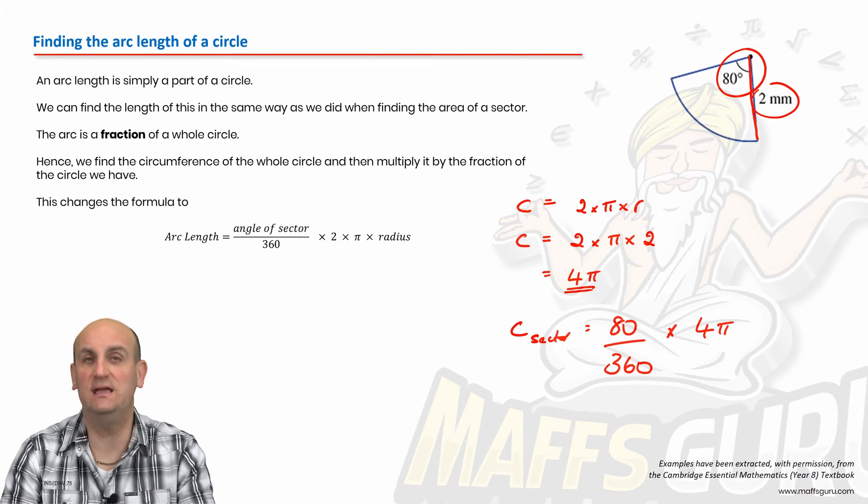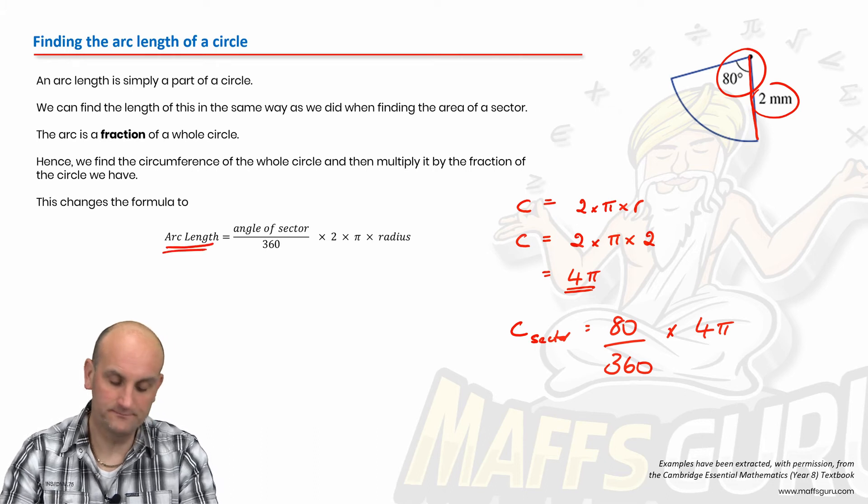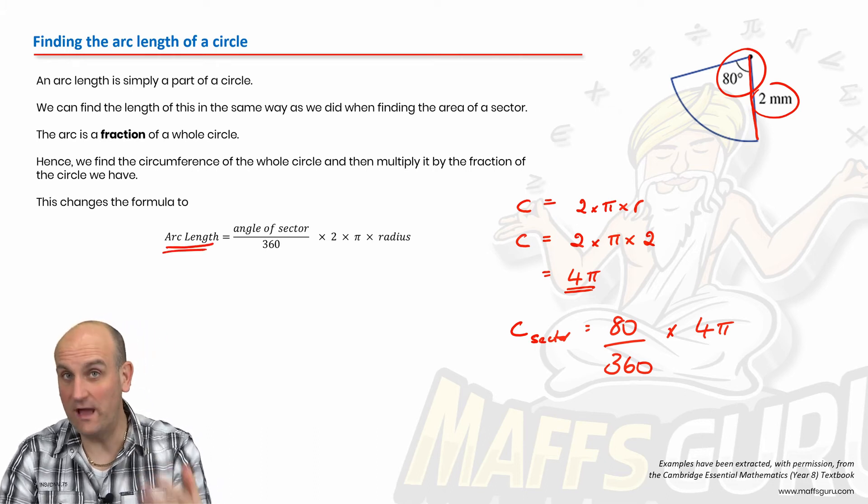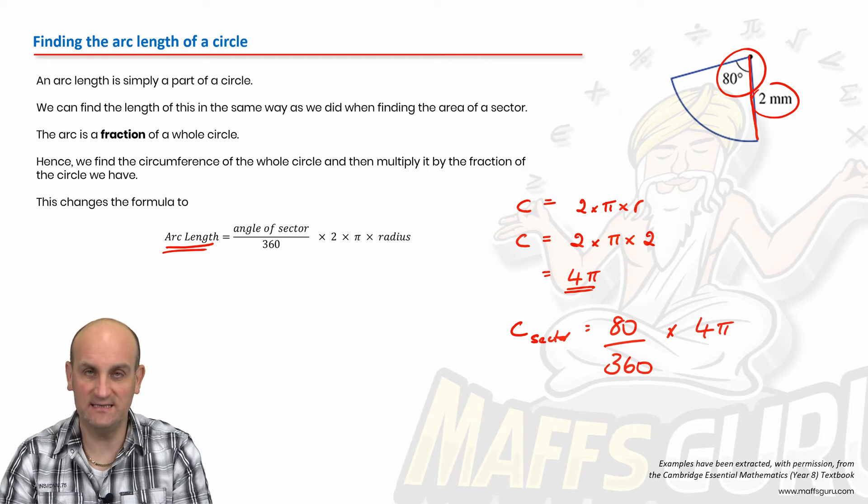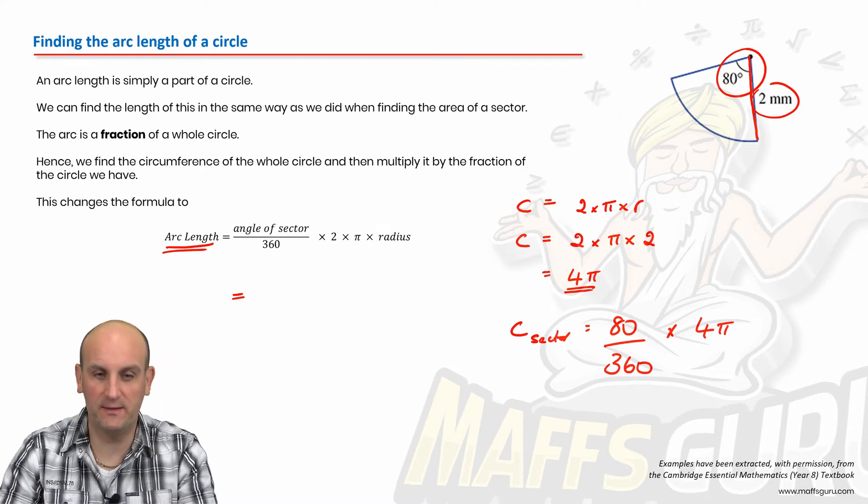So I've got a fraction of 80 degrees out of 360 degrees. Because I've only got 80 degrees of it. There are 360 degrees in the whole circle of which is times 4 pi. So that is the circumference of my sector.